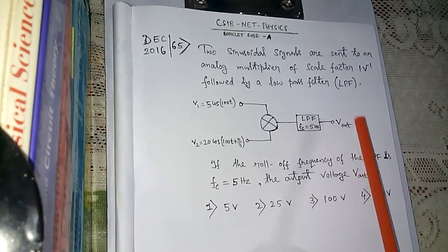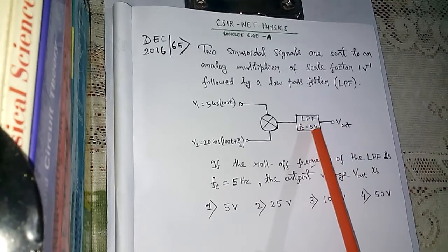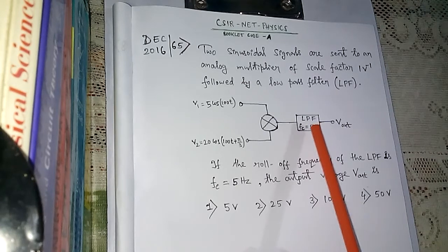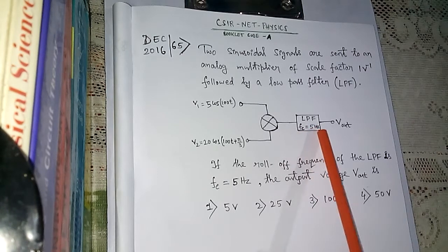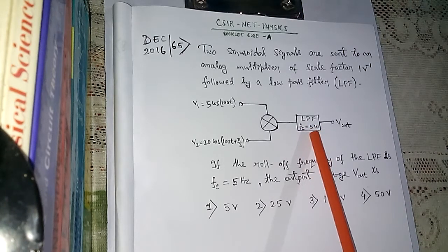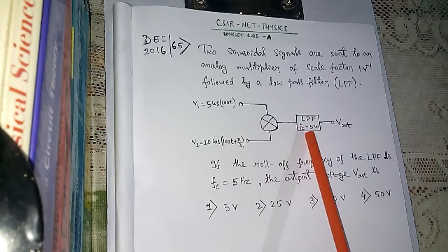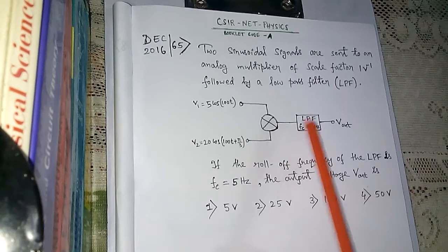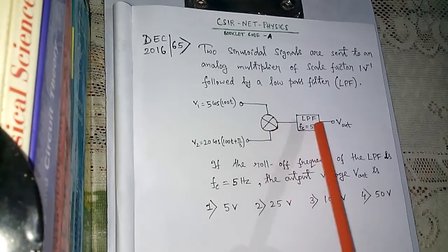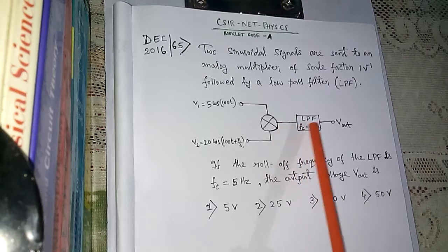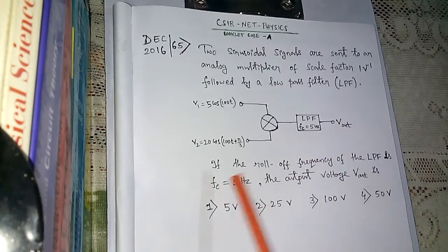This low-pass filter is actually an active filter — a filter circuit made by using an operational amplifier. We know the operational amplifier is an active device, so this is one more example of the application of the operational amplifier. So the multiplier is an application of the op-amp, and this low-pass filter circuit is also an application of the operational amplifier. We have two stages: first an output from the multiplier, then that output goes through the low-pass filter.